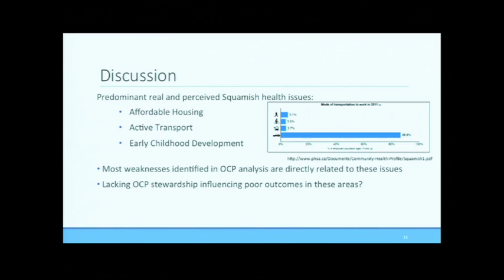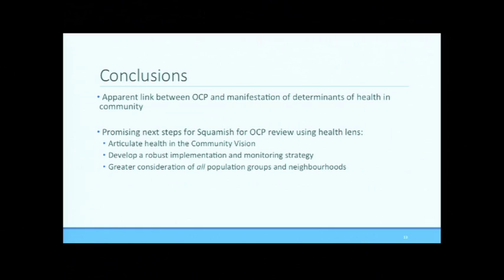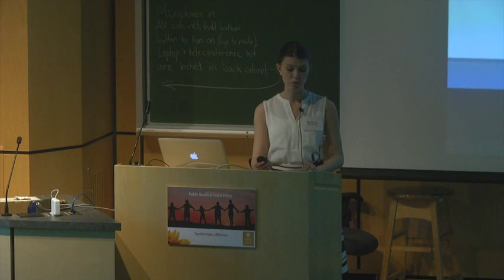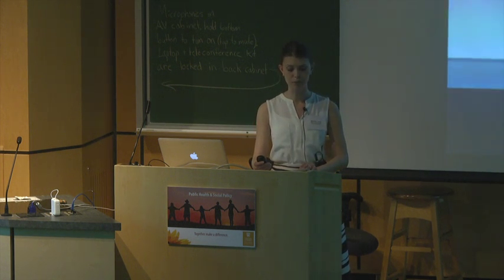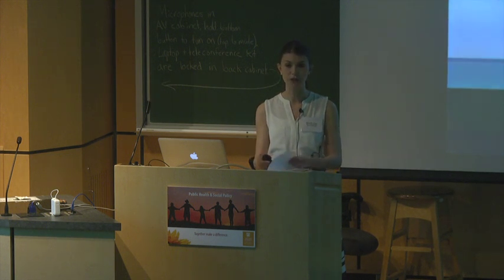It's interesting to contemplate this apparent link between lacking OCP stewardship and actual poor performance in these indicators. The purpose of this analysis was to assess the current OCP's strengths and weaknesses in healthy and equitable policy and to assess the OCP's capacity for healthy and equitable policy upon review. Through this analysis, an apparent link between the OCP and significant health issues in Squamish was identified, which may hopefully help to provide further rationale for using a health lens during the next OCP review. The most promising recommendations for the district include clearly defining health in the community vision, developing an implementation and community monitoring system and strategy, and incorporating greater consideration of all population groups and neighborhoods by first developing a more comprehensive consultation and outreach strategy.